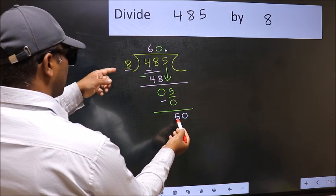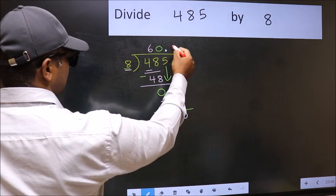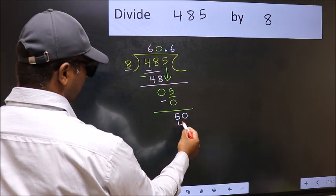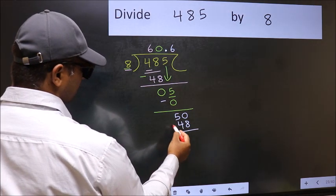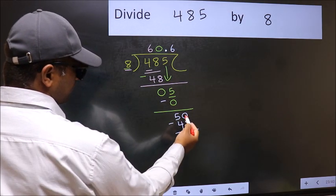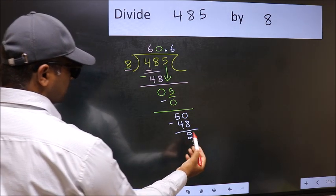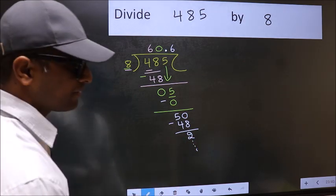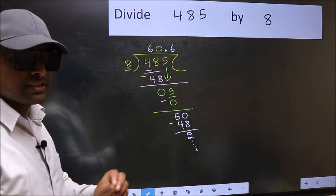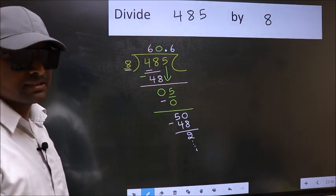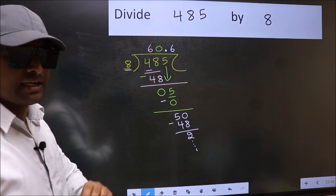A number close to 50 in 8 table is 8, 6, 48. Now you should subtract 50 minus 48, 2. And continue the division. I am not doing that. Did you understand where the mistake happens? You should not do that mistake.